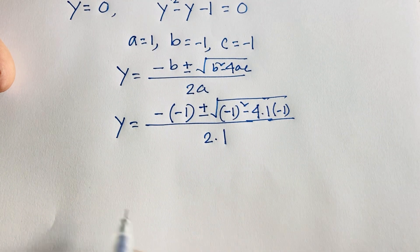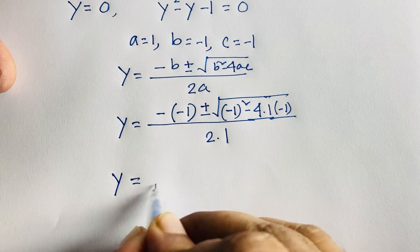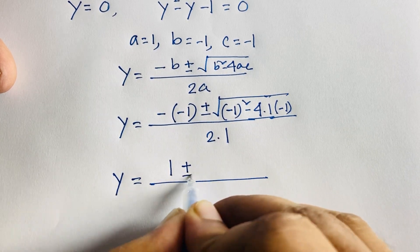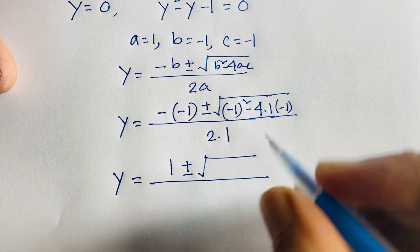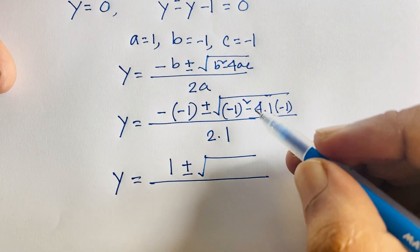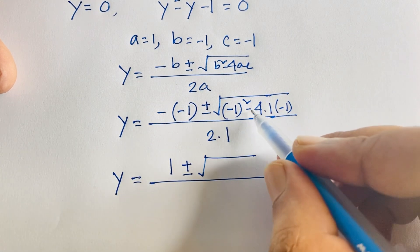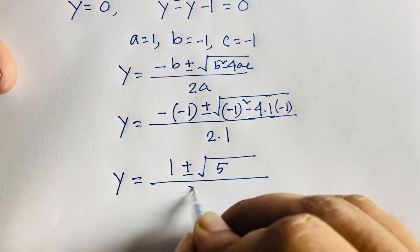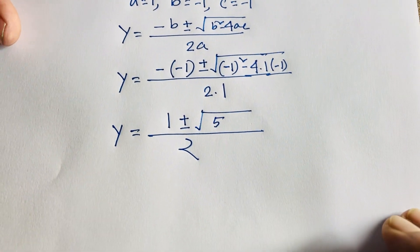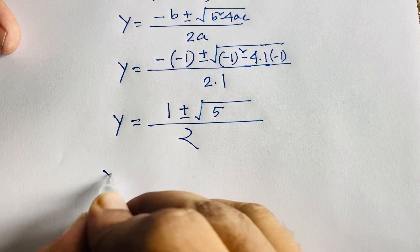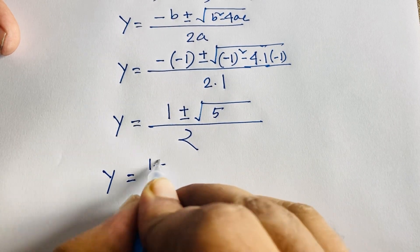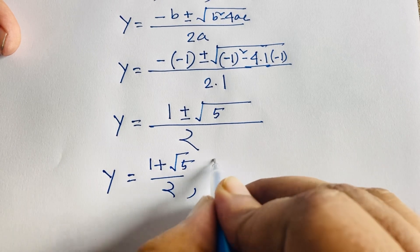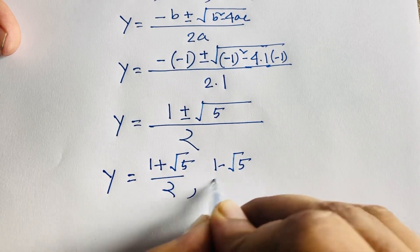Simplifying, y equals 1 ± √(1 plus 4) over 2, which gives y equals 1 ± √5 over 2. So the two values are y equals (1 plus √5) over 2, and y equals (1 minus √5) over 2.